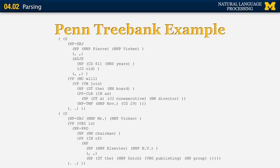Here's an example from the Penn Treebank — a very large resource for parsing information manually built at the University of Pennsylvania in the 90s, extensively used for training parsers over the last 20 years. The example is a realistic sentence from the Wall Street Journal. There are two sentences, each marked with S. The first has a noun phrase subject and a verb phrase, and includes additional constituents such as an adjectival phrase — in this case '61 years old.' The second sentence has a modal verb like 'will.' This contrasts with the toy examples seen so far.